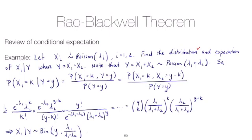Now that's the first part, so we've answered the distribution part. What about the expectation part? So if we wanted the expectation of x1 given y, well, the expectation of a binomial is our n number of trials times probability of success. So that would be y times lambda one over lambda one plus lambda two.